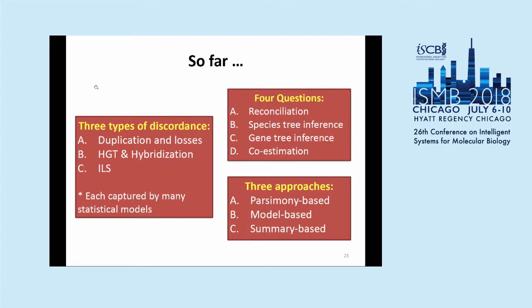To summarize what we saw: gene trees and species trees can be discordant. There are three main ways discordance can come about: duplication and loss, hybridization or horizontal gene transfer, and ILS. For each of these there are statistical models, including some that combine two or three of them. We saw four questions we might want to answer: mapping gene trees to a species tree, inferring a species tree from gene trees, improving gene trees knowing the species tree, and co-estimation of gene trees and the species tree. And there are three different approaches to solve these problems.